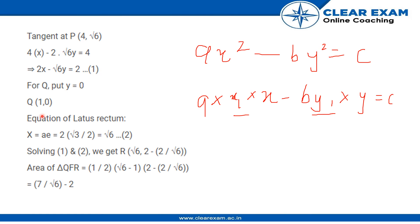And we know that the equation of latus rectum is represented as x = ae, where x is the x coordinate and this becomes 2 into √3/2 for hyperbola, so we get the value as √6.